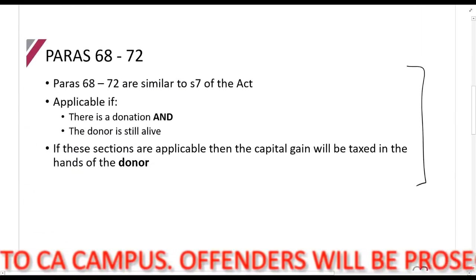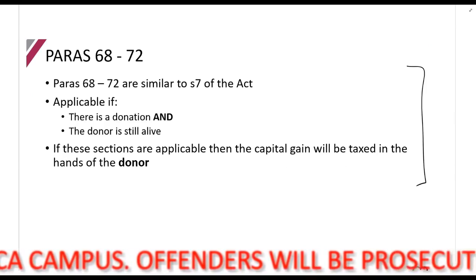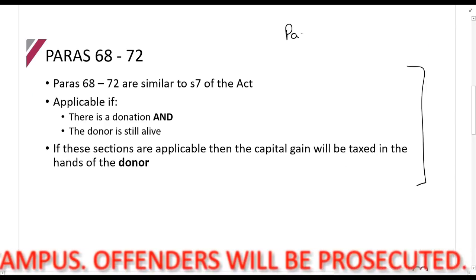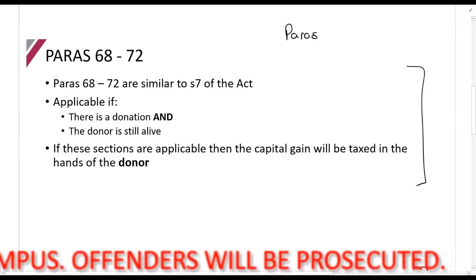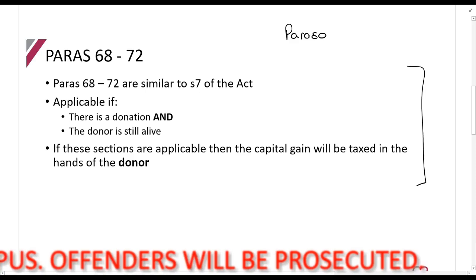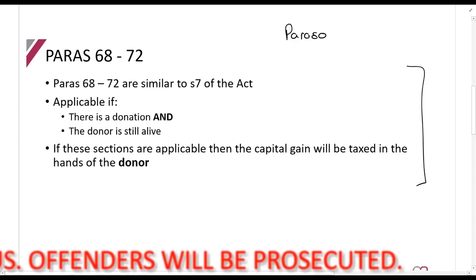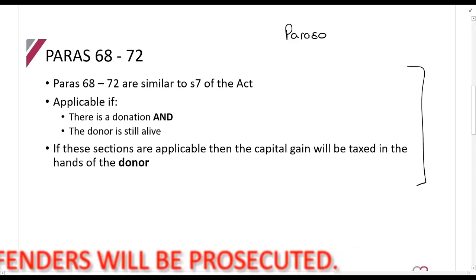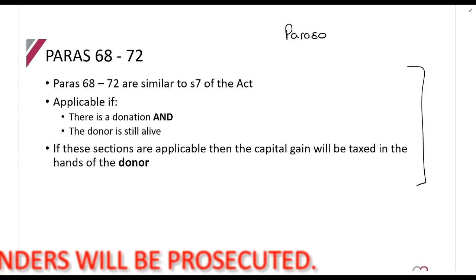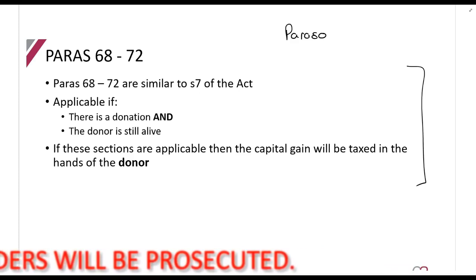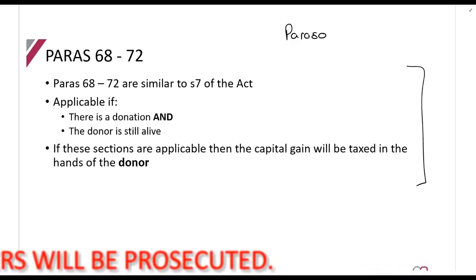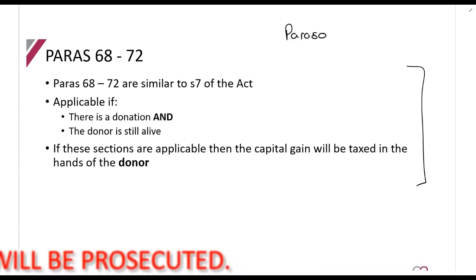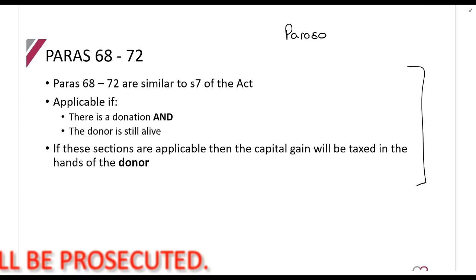If this section applies, remember we have looked at paragraph 80. Paragraph 80 says if you have an asset or capital gain and you give it to the beneficiary, then the beneficiary must be taxed. However, if there was a donation and the donor was still alive, then the donor may be taxed.